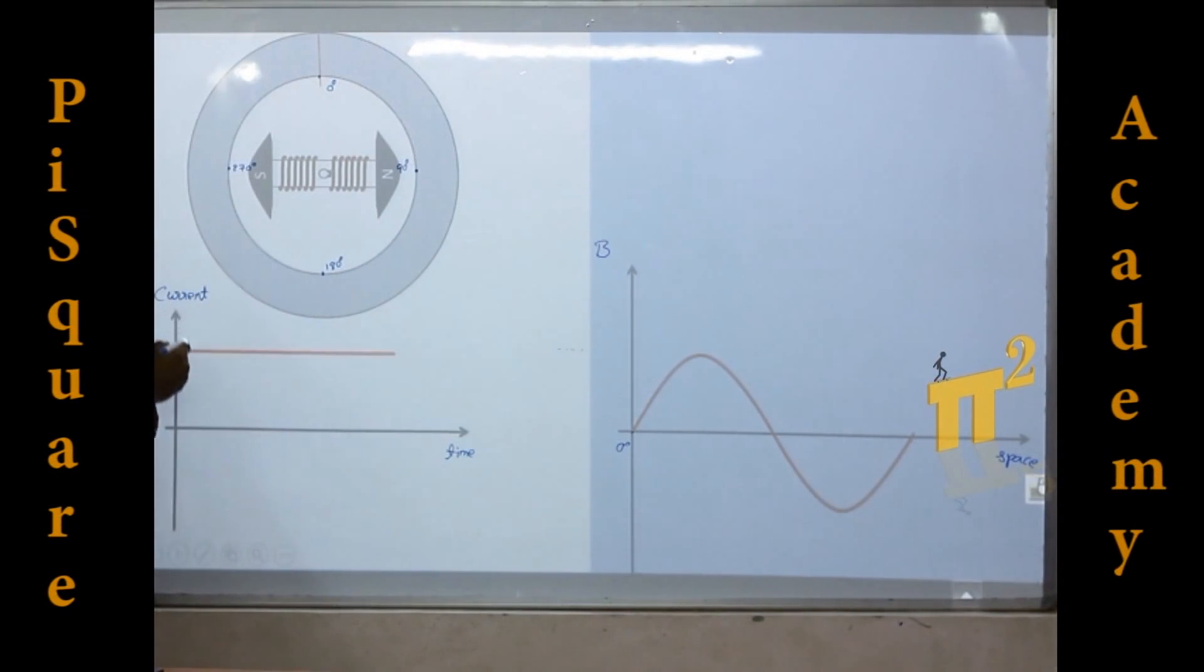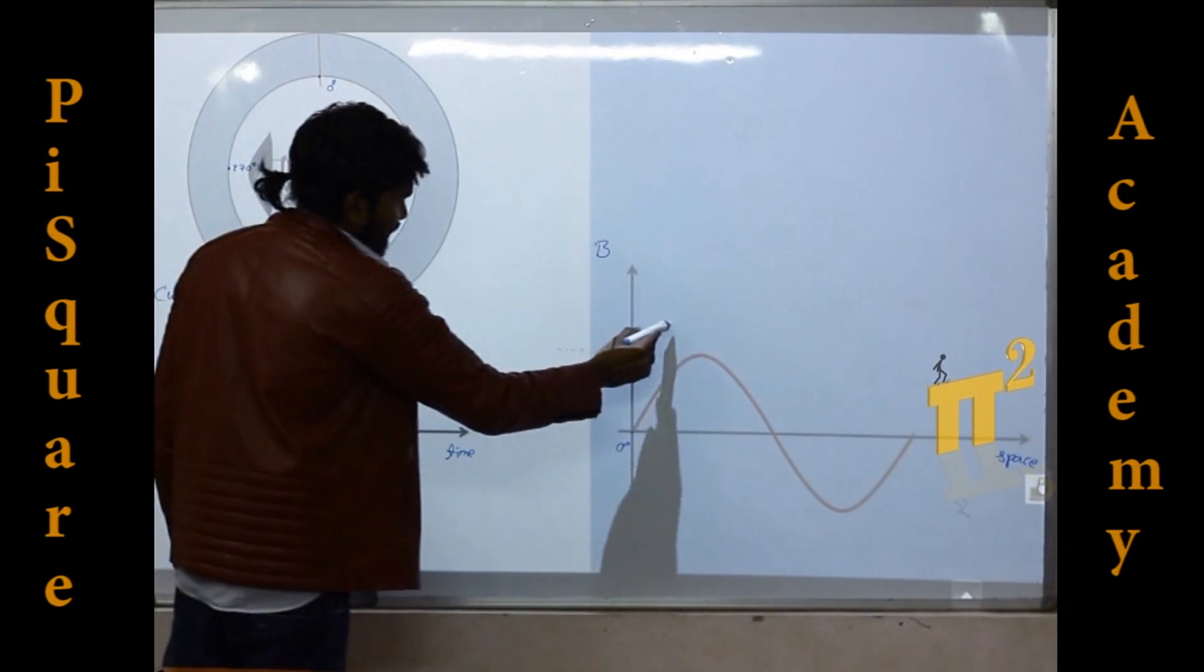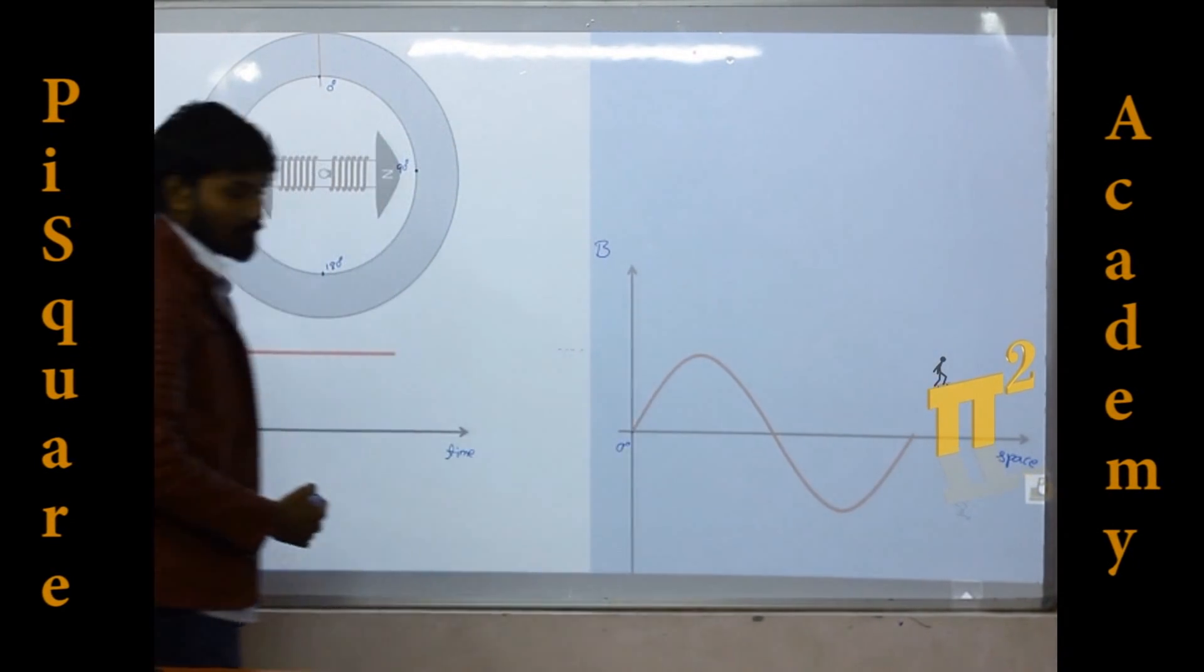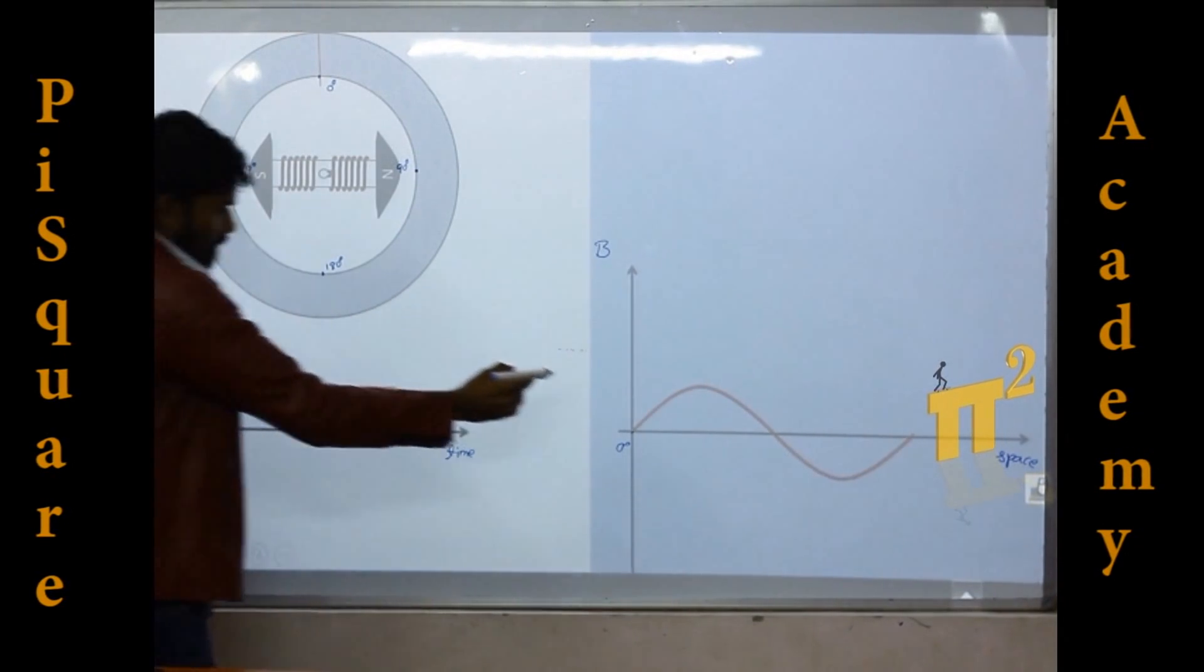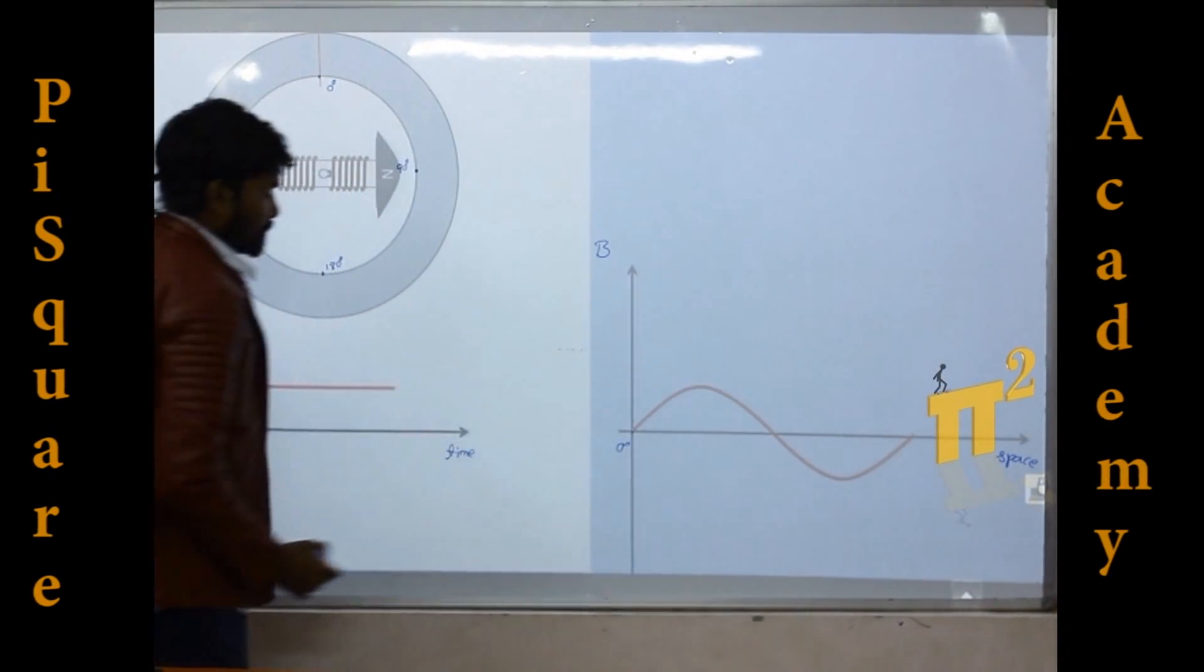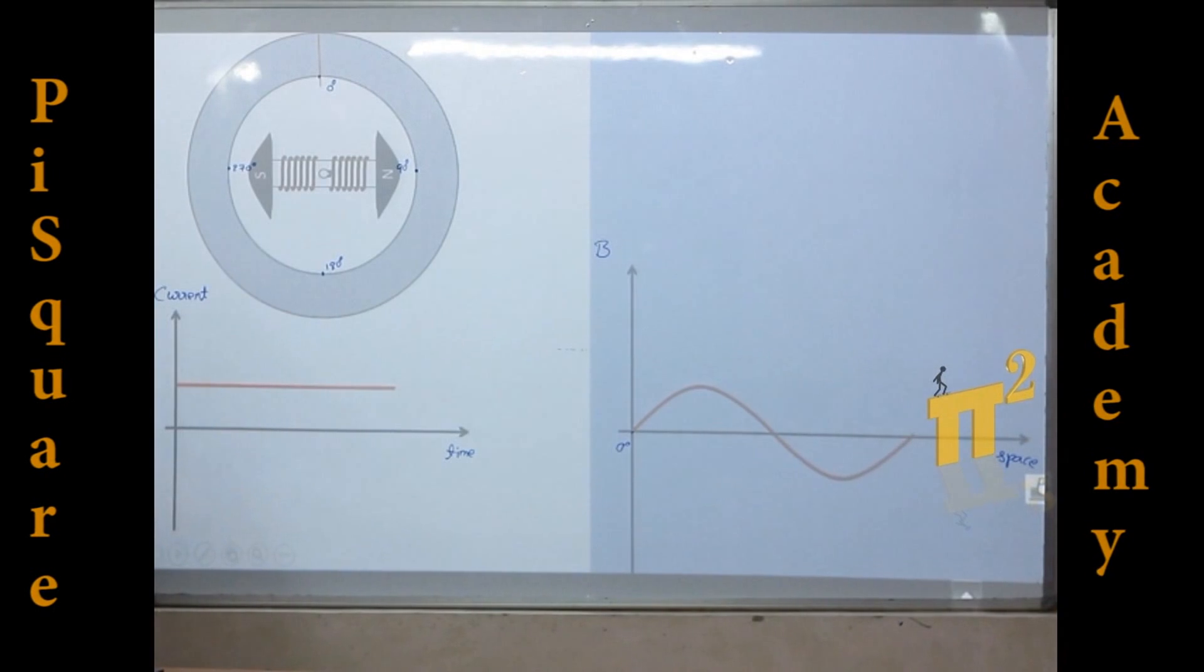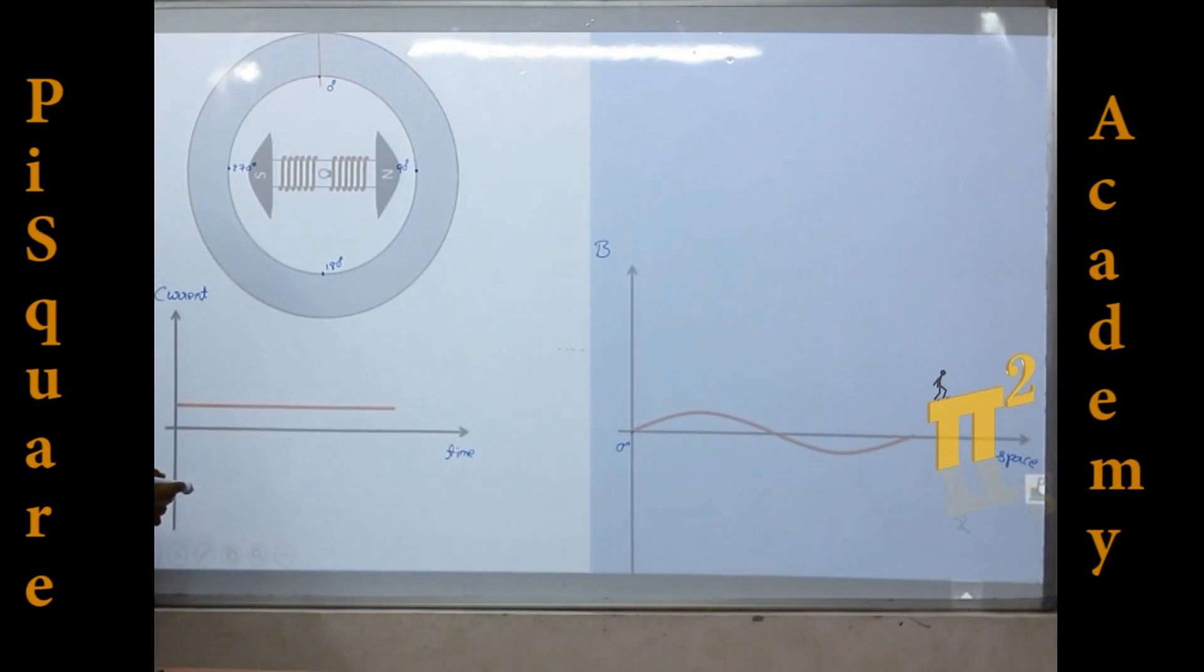As magnitude is reduced, flux density maximum also gets reduced further. So this is also getting reduced further, similarly there also.